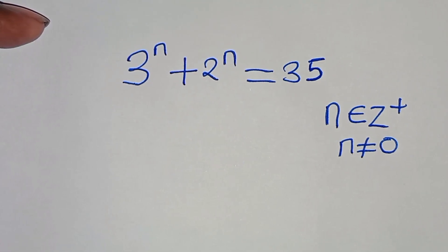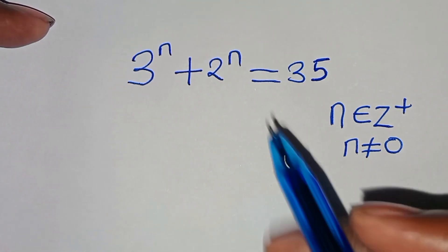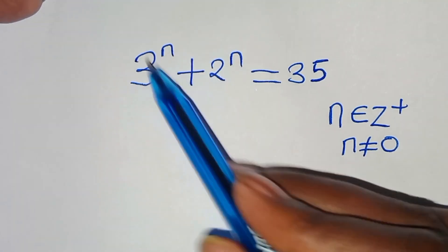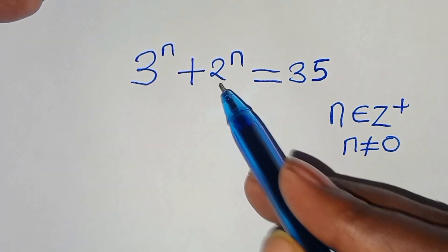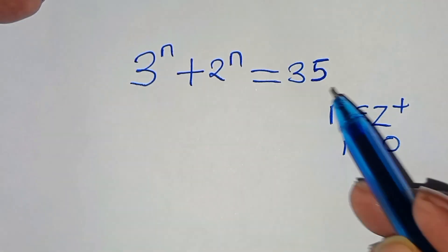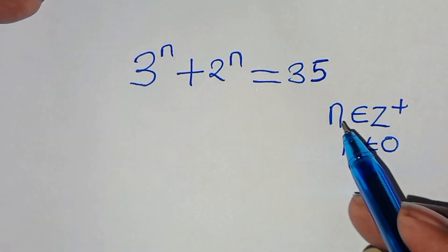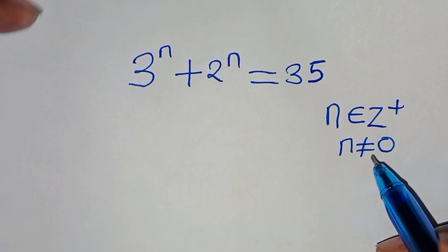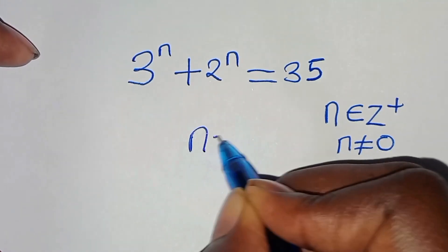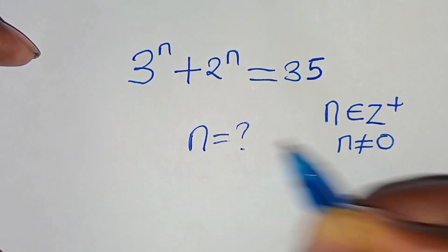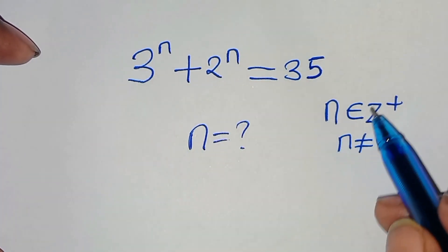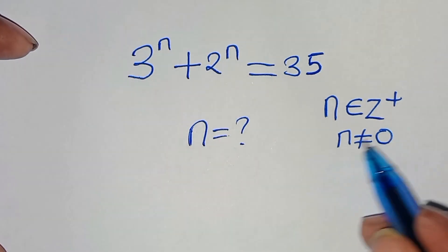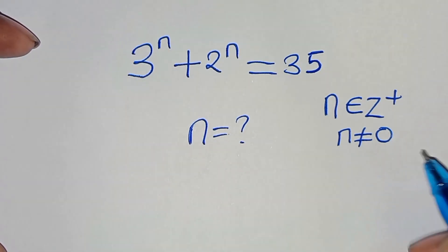Hello everyone, you're welcome to solve this nice algebra problem, which is 3 to the power of n plus 2 to the power of n, and this is equal to 35. So what is the value of n, given that n is a member of positive integers and that n is not equal to 0?